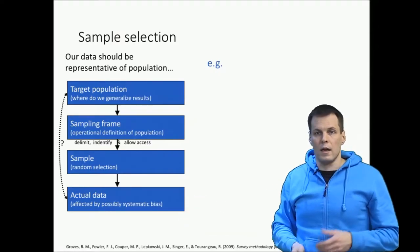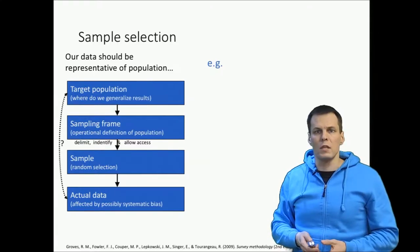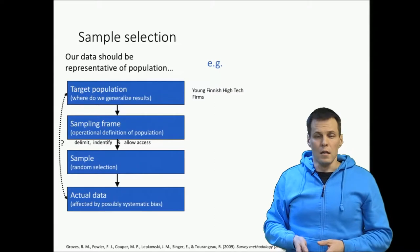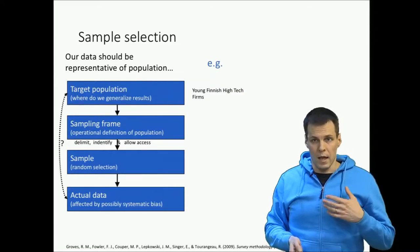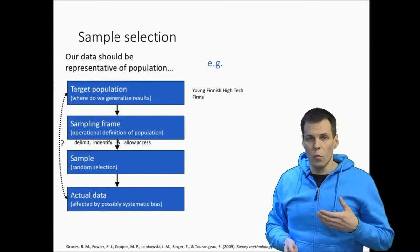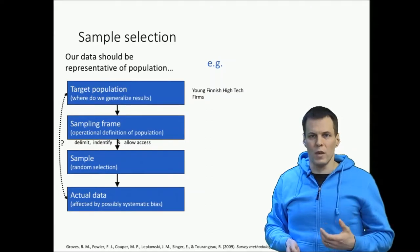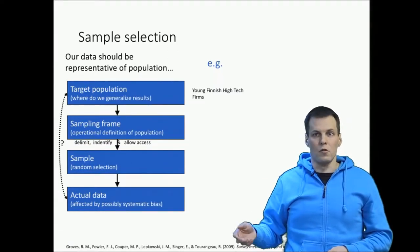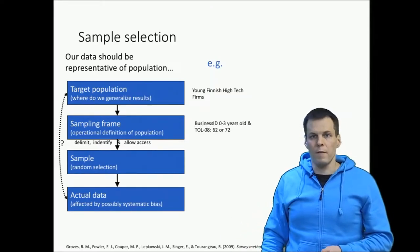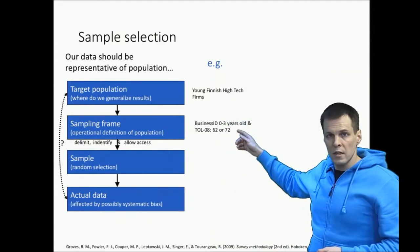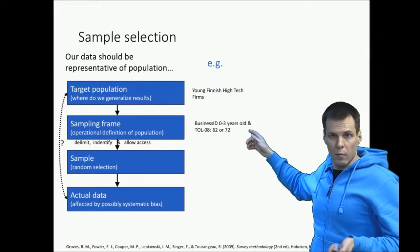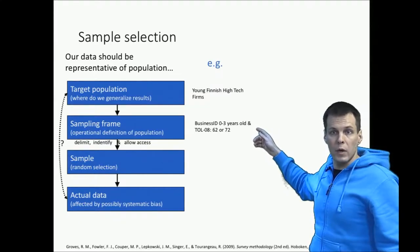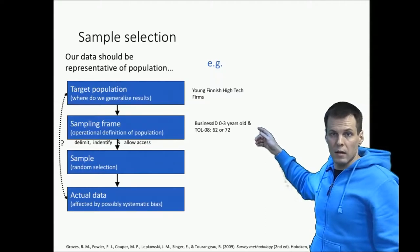A number of things can go wrong and we have to take those into consideration. Let's take an example. Say we're studying the population of young Finnish high technology companies. That is a conceptual definition — then we need an operational definition of what it means to be a young company and what it means to be a technology firm. No one is maintaining a list of technology companies, so we have to operationalize that concept. The sampling frame would be, for example, business IDs — registered corporations — which is not the same thing as a company.